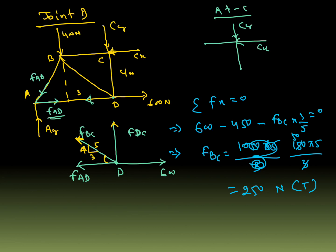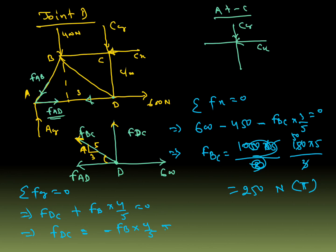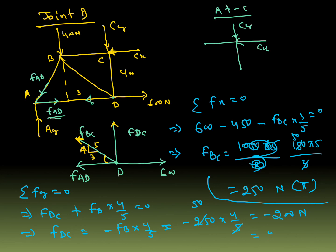Along the Y direction at point D, upward positive, downward negative: FDC plus FBC times 4/5 equals zero. FDC equals minus FBC times 4/5 equals minus 250 times 4/5 equals minus 200 N. Our assumption was tensile but the result is negative, so FDC is compressive, 200 N.